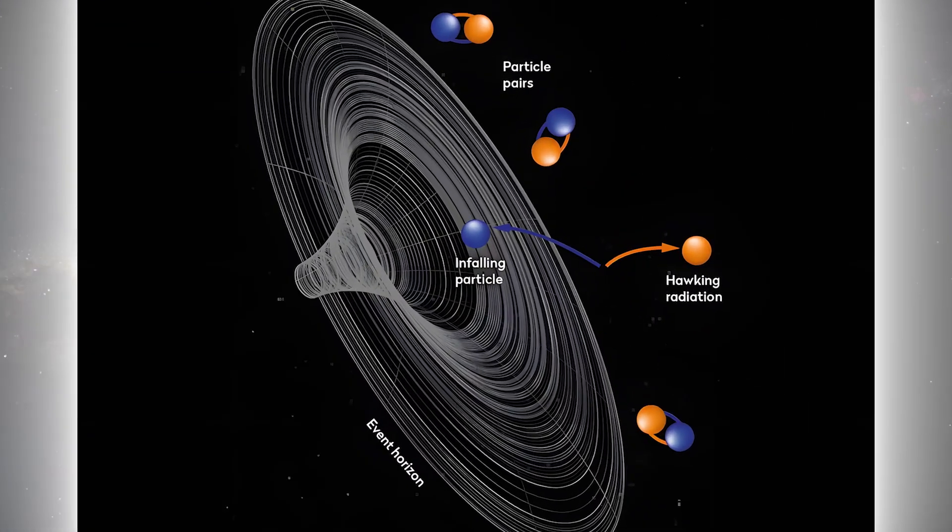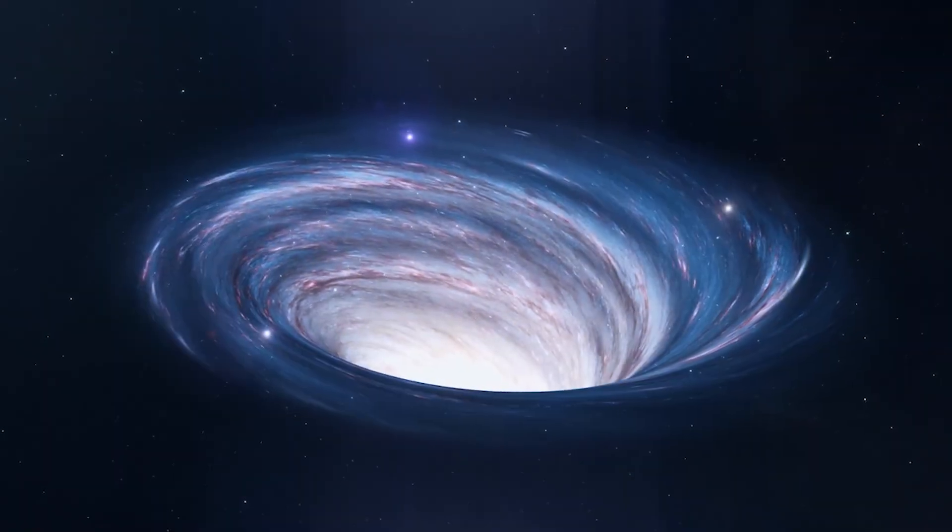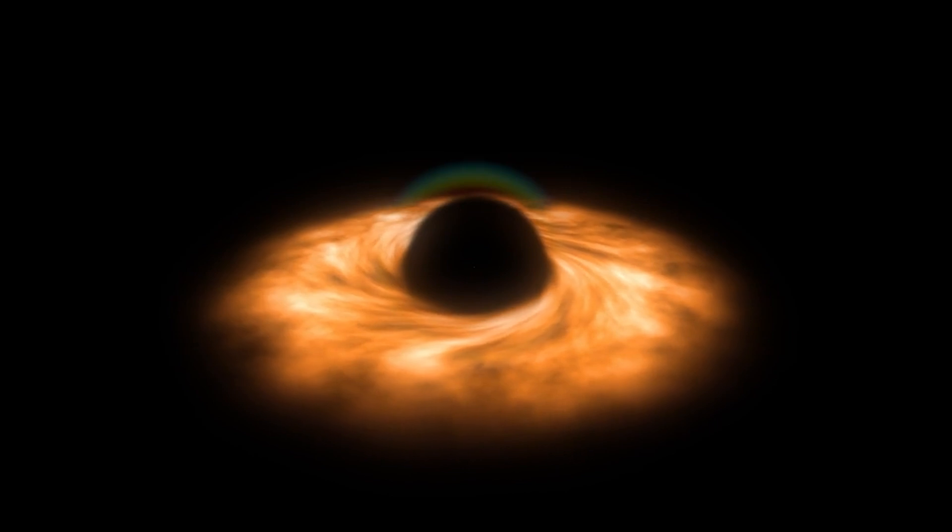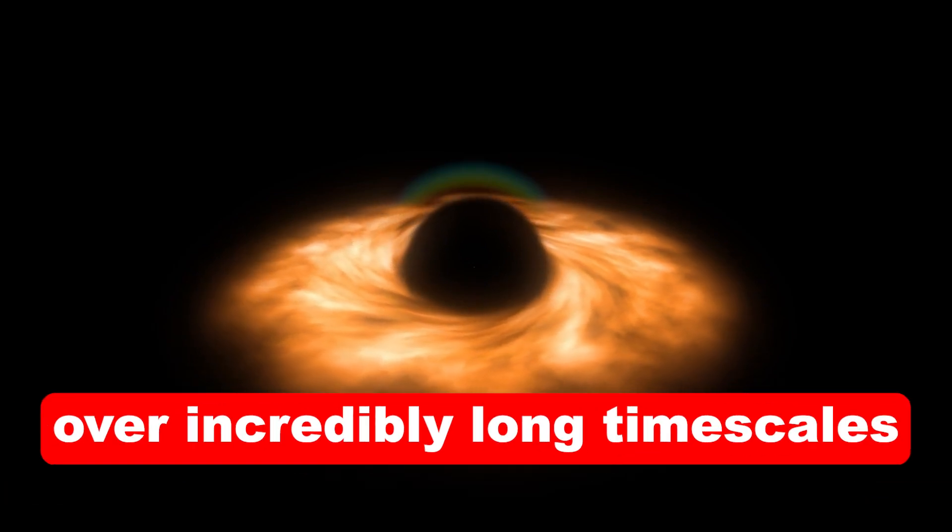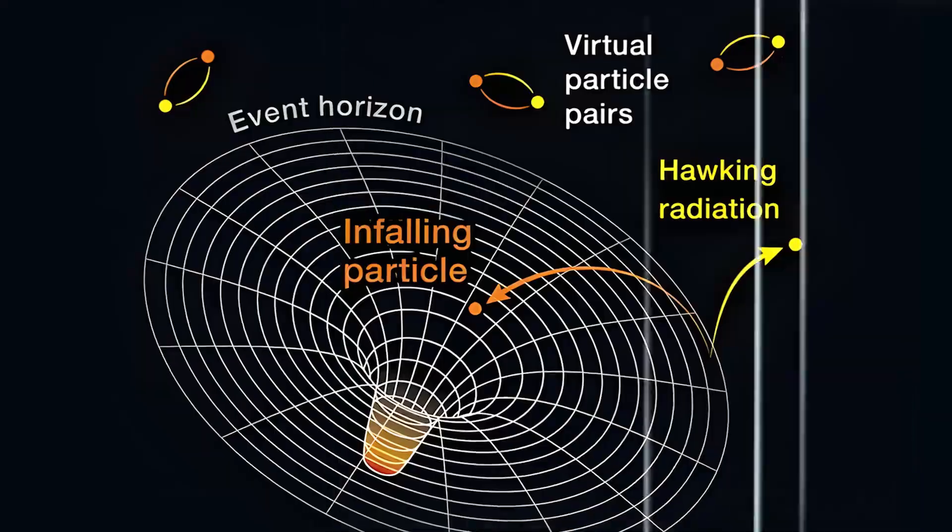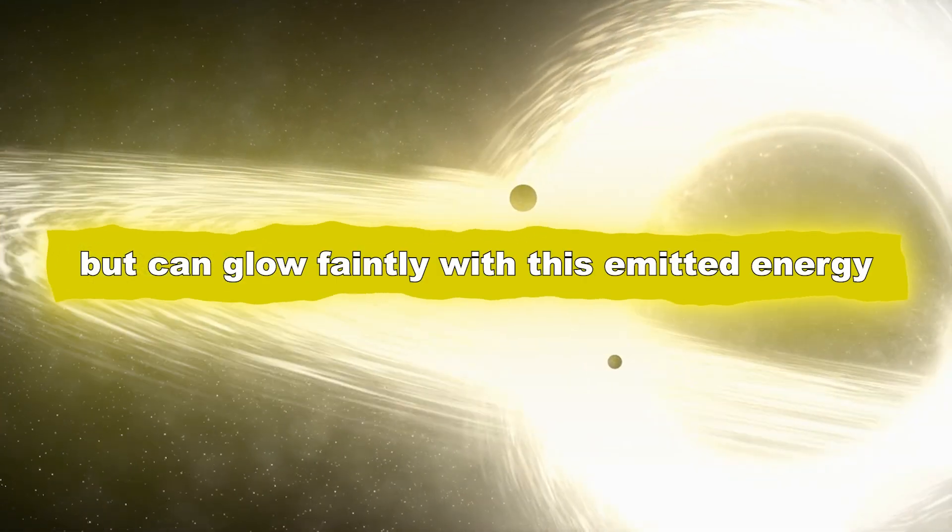This radiation causes black holes to lose mass and can eventually lead to their evaporation over incredibly long time scales. Hawking radiation challenges our understanding of black holes and suggests they are not entirely black, but can glow faintly with this emitted energy.